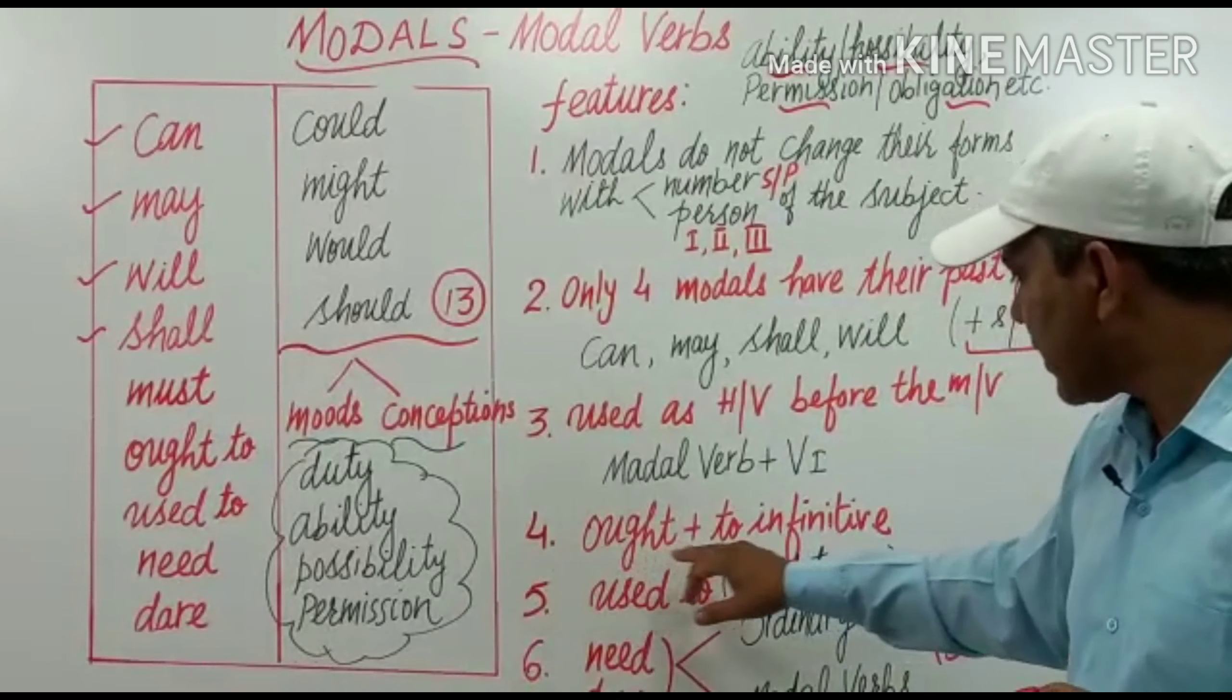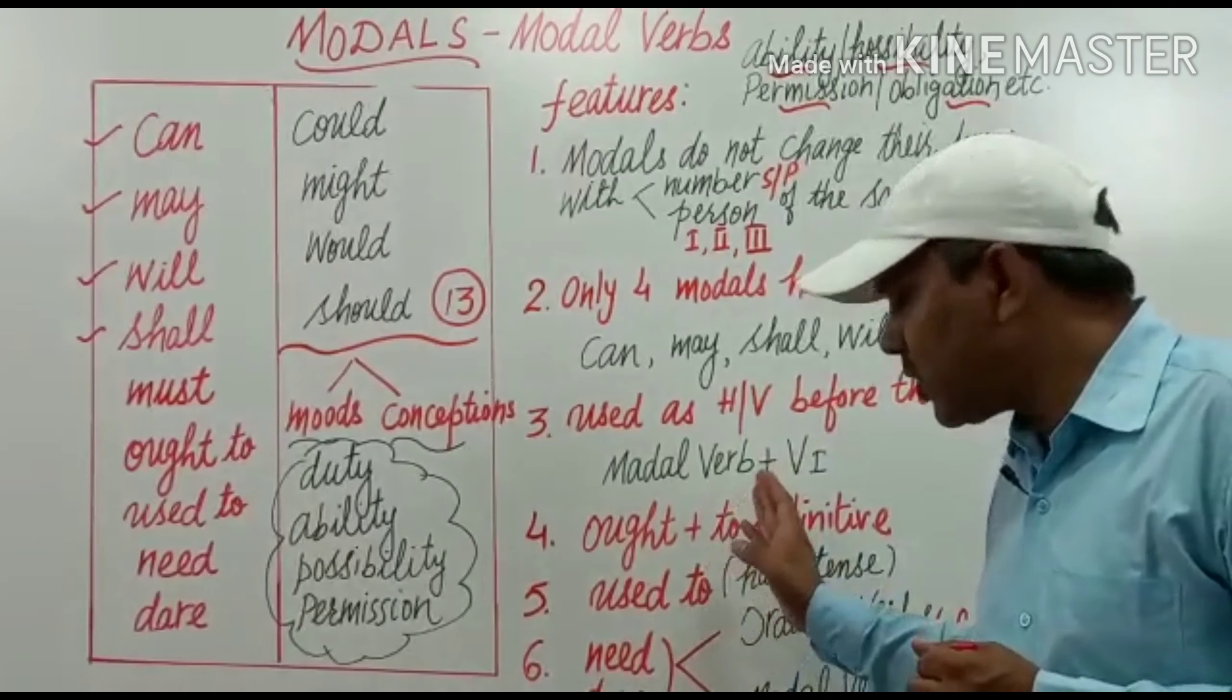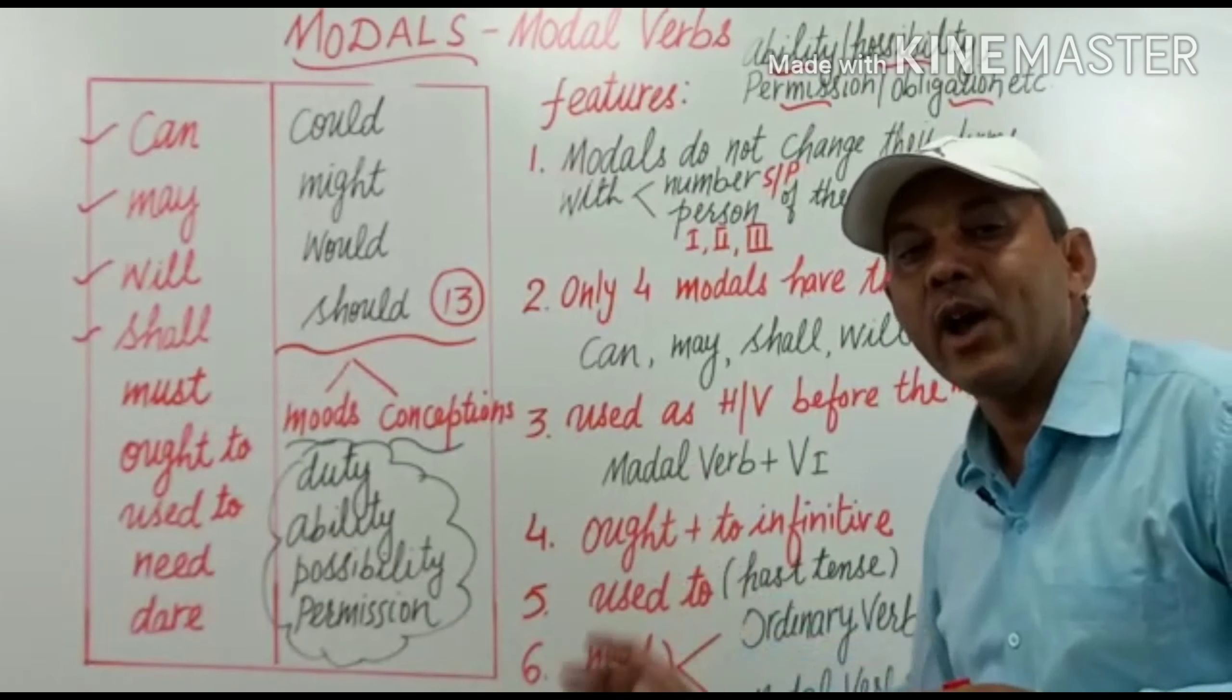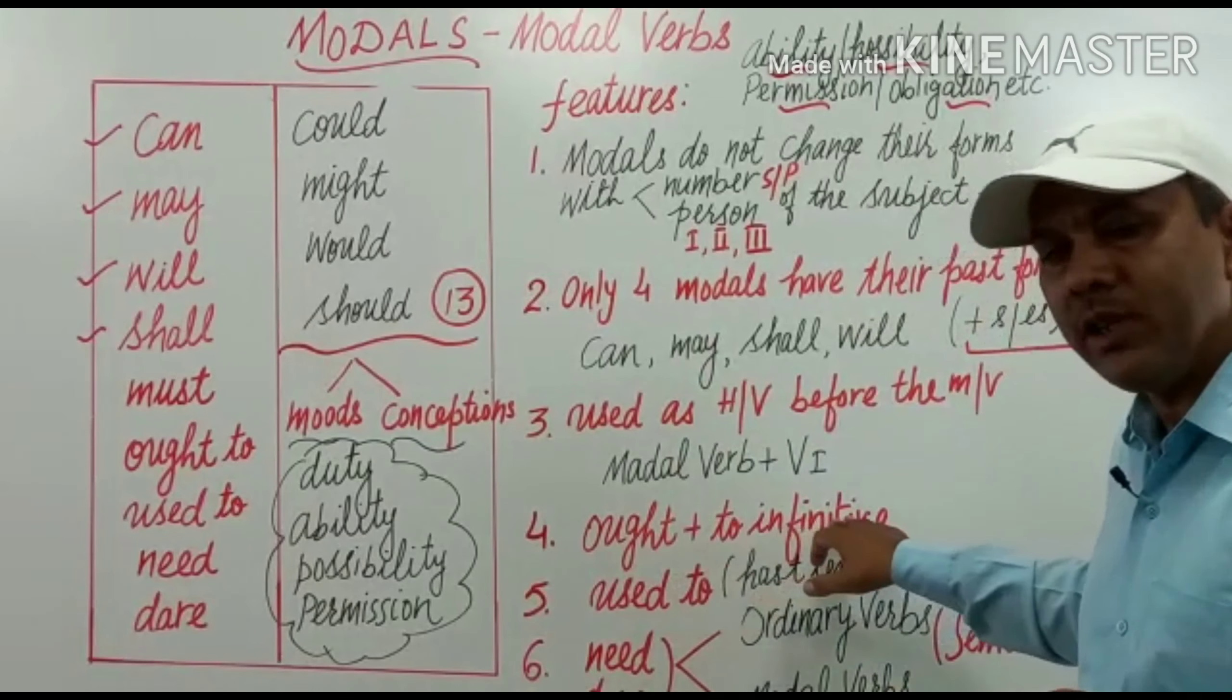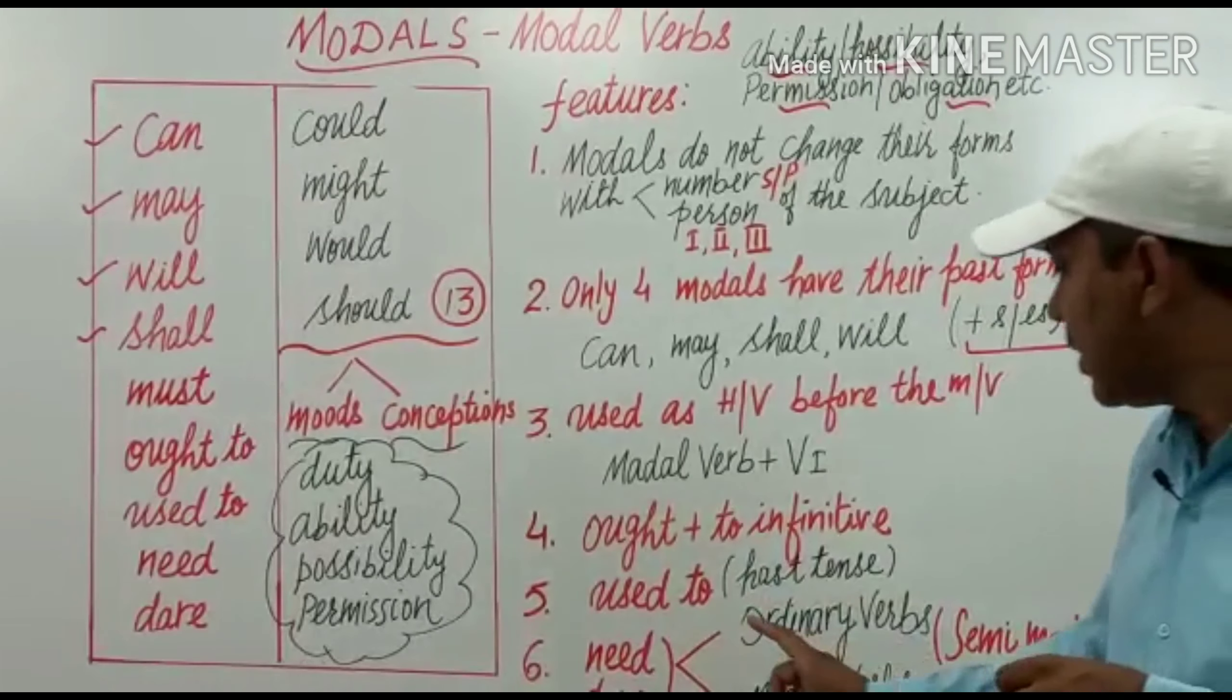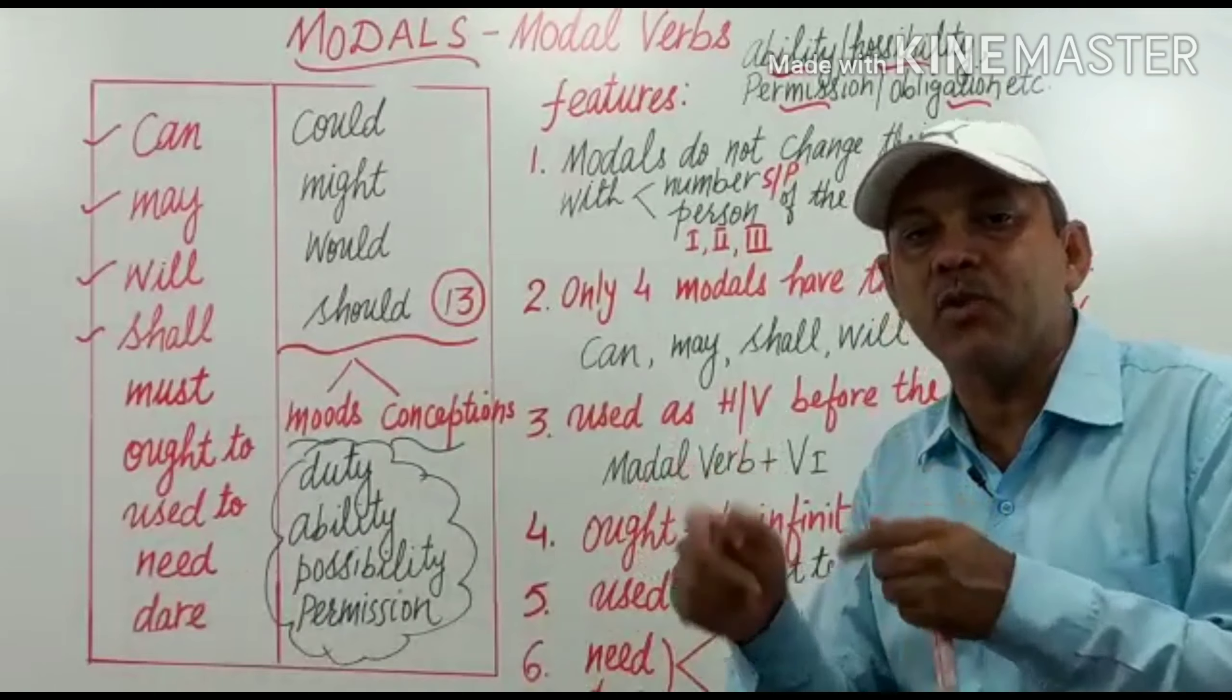Fourth is ought and used. These two models are followed by to. Or to is preceded with used and ought as models. Ought plus to infinitive means to V1 and used to is a different modal verb which is used in past tenses only to show the habit, to express the habit of someone.